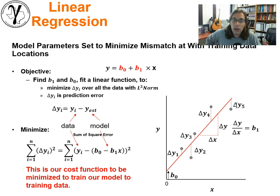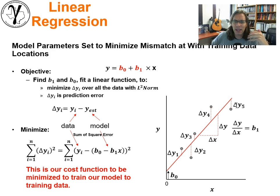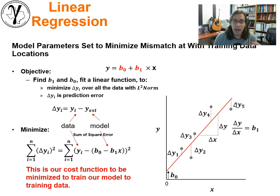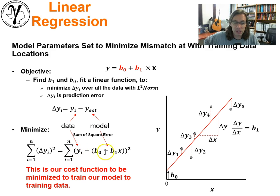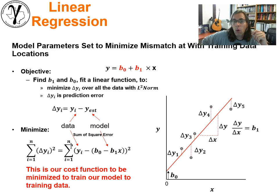How are we going to minimize them? Because we've got errors at individual locations, we can't try to minimize the error individually at all of the training data locations — we need to summarize this. This is why we need a norm. We have a vector of errors, and we need to get it down to a single value that we can try to minimize. We could take a summation of all of these squared errors — the true values minus the estimates, squared, and summed. This is now our cost function that we're trying to minimize in order to train our model.